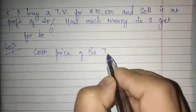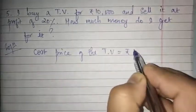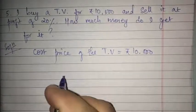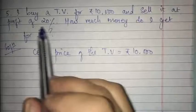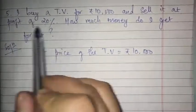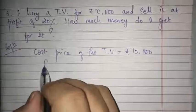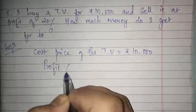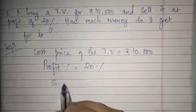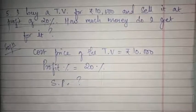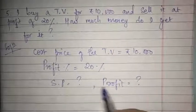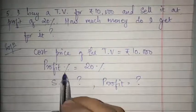The cost price of the TV is rupees 10,000. Since it says 'sell it at a profit of 20%', this is the profit percent — so do not write it as SP. Profit percent is equal to 20%. We have to find the SP and also find the profit.